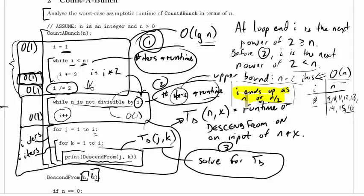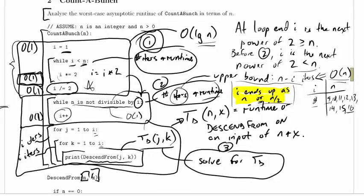We know i ends up as n or n over 2. We know we've got an upper bound asymptotically on the number of iterations for order n. We know that the number of iterations is n minus i, except in that one special case where i is n over 2. So that all seems really valuable.